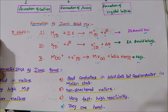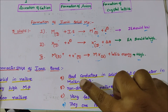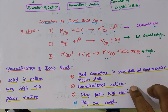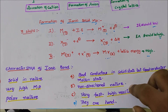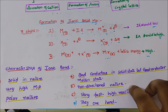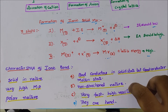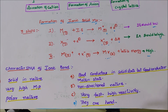The characteristics of ionic bond are: first, ionic compounds are solid in nature. Second, they have very high melting points due to the electrostatic force of attraction among ions. Third, they have polar nature, as they always dissolve in polar solvents. Fourth, they are bad conductors of electricity in solid state and good conductors in molten state.